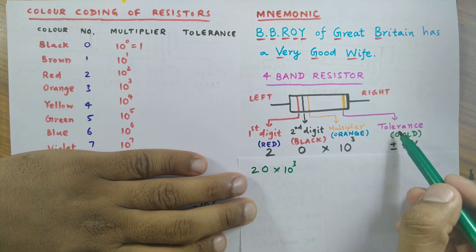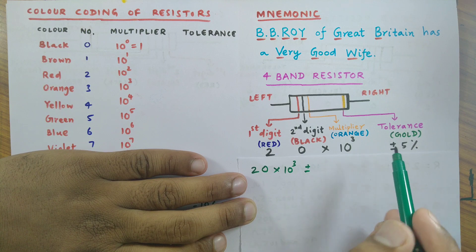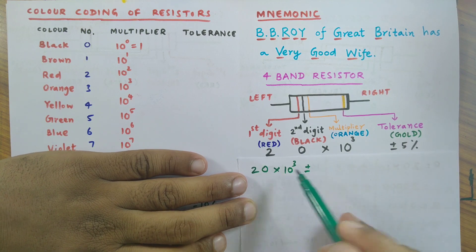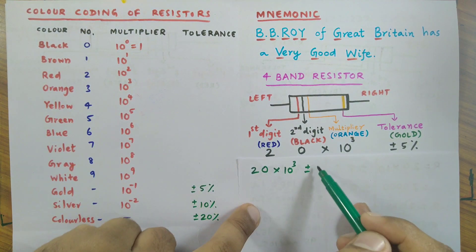The last one is the tolerance ring. We take plus or minus - gold represents five percent, as written here.